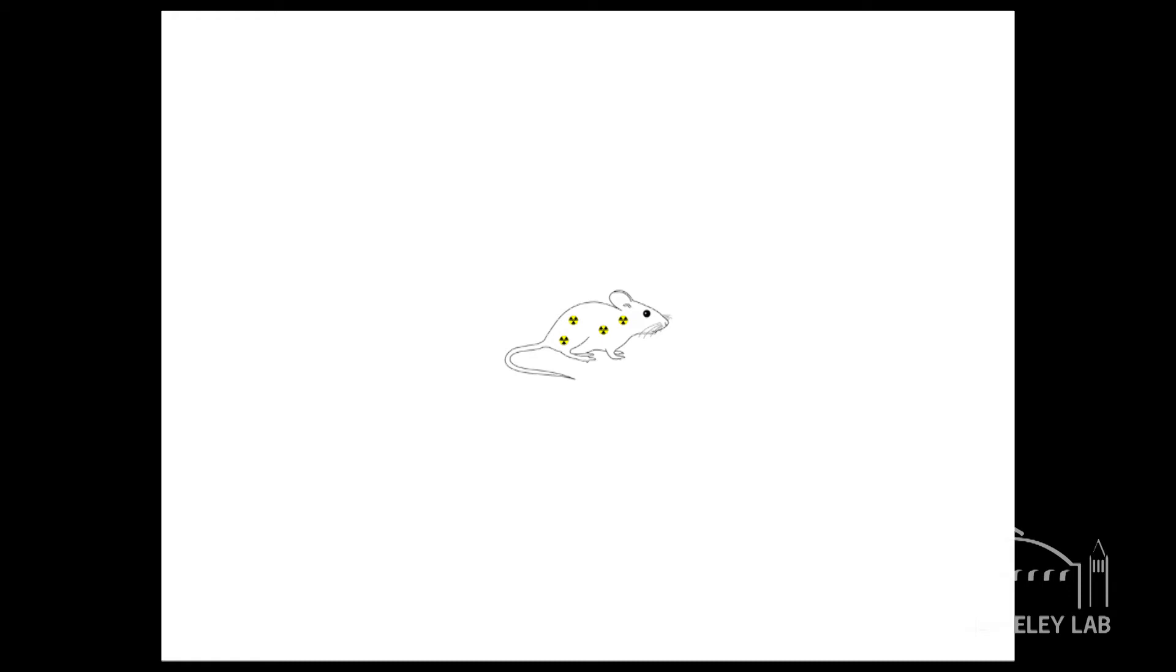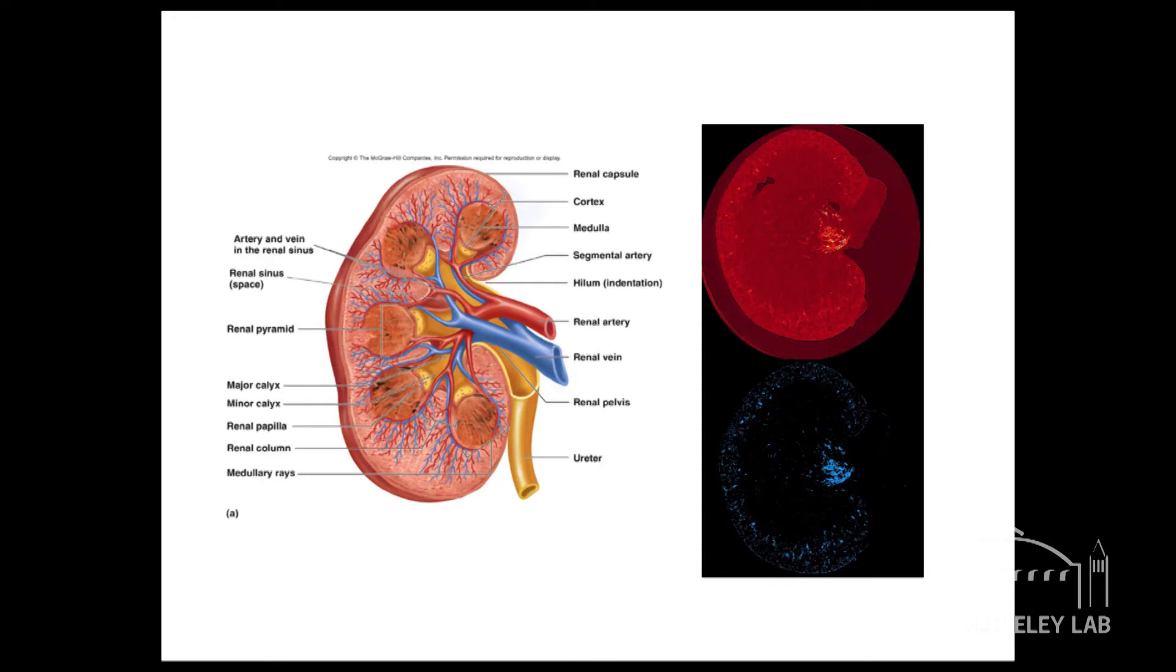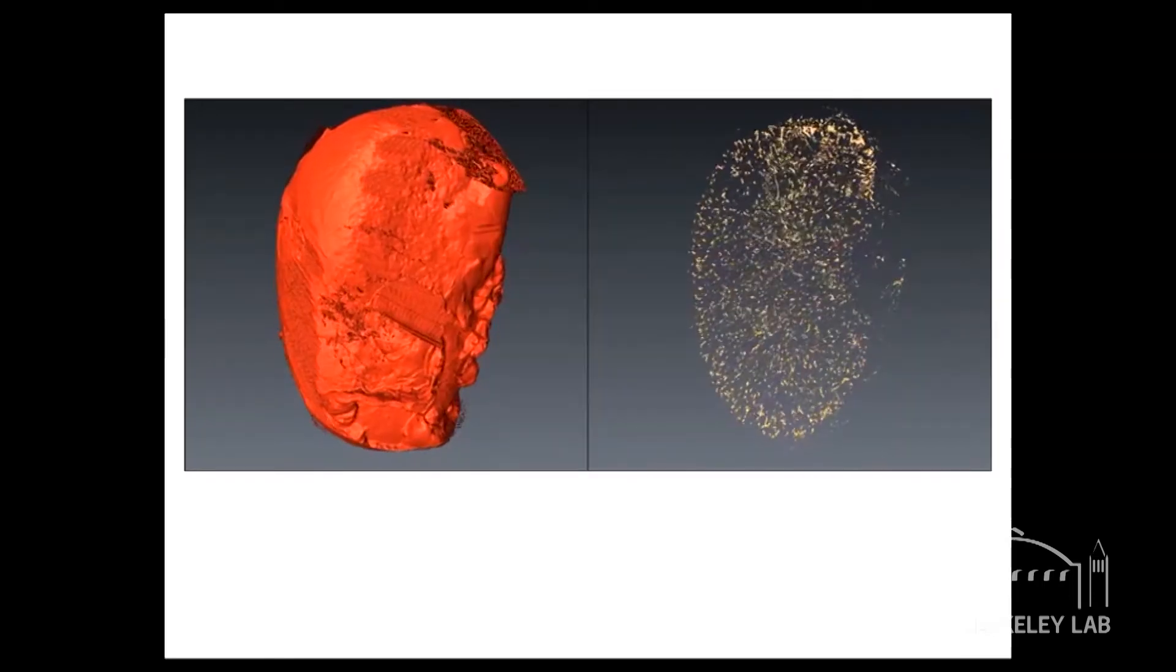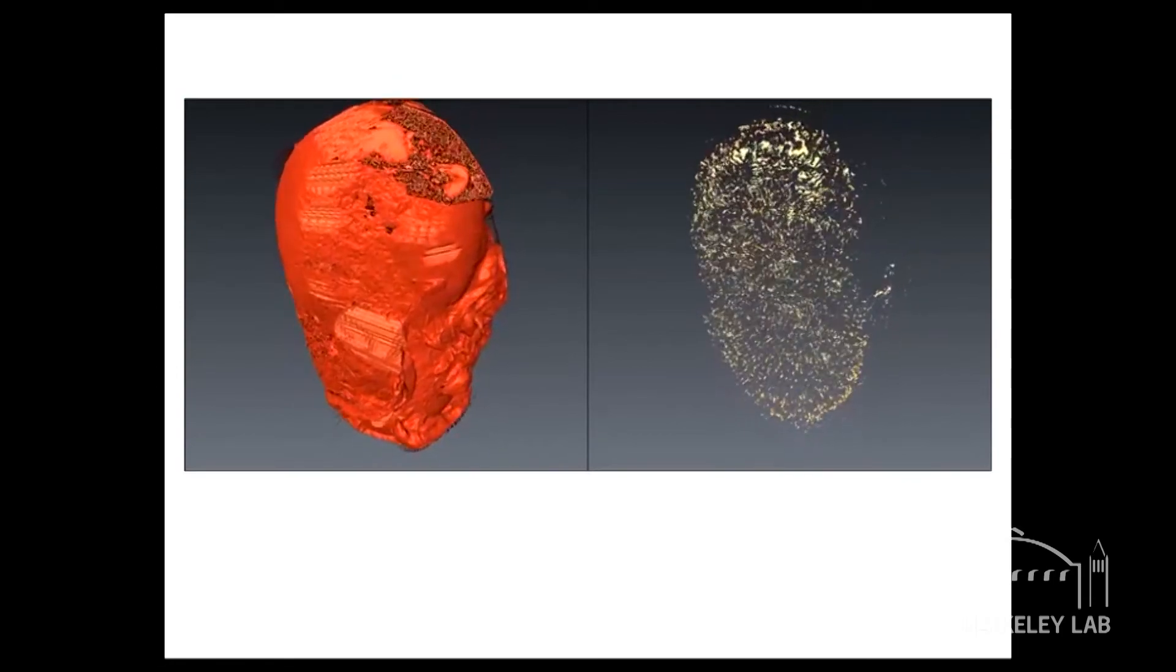We inject animals with radioactive material, so we have contaminated animals. We want to know where the radioactivity is in the body. We use powerful tools like the synchrotron, the Advanced Light Source that Musa described earlier. Here you have a schematic of a kidney. On the upper image, you have the kidney of a mouse contaminated with uranium. At the bottom, we take out the background, and this is where the uranium is. All those shiny spots are where the uranium gets.